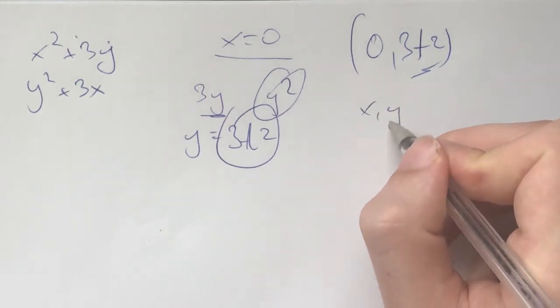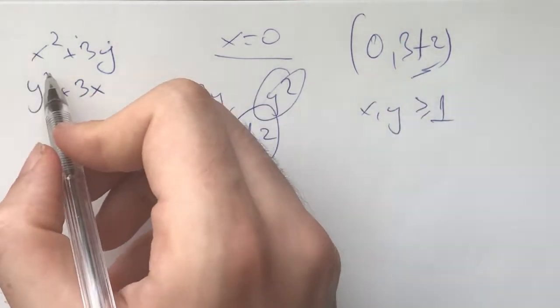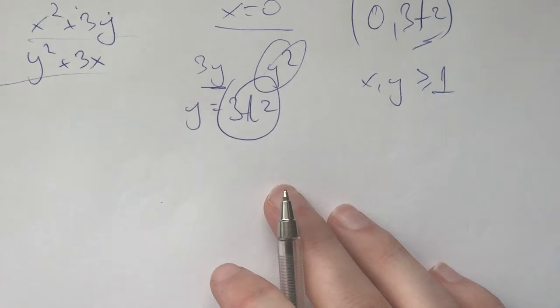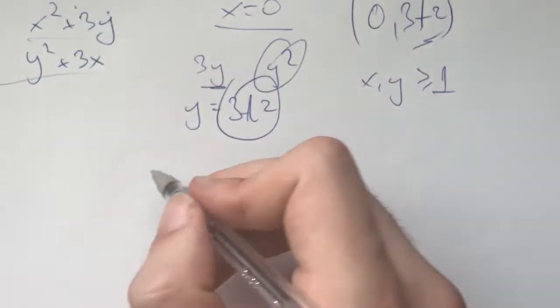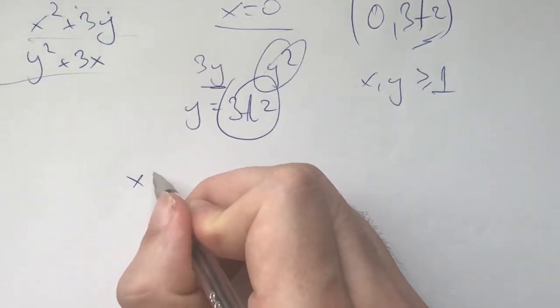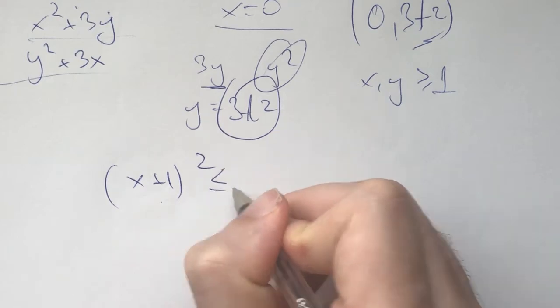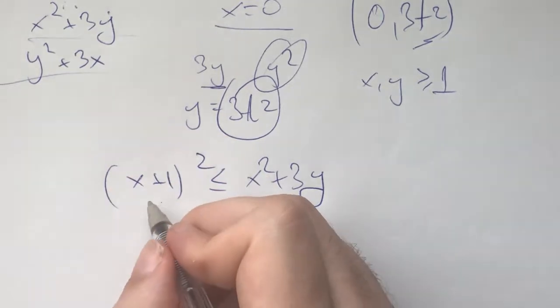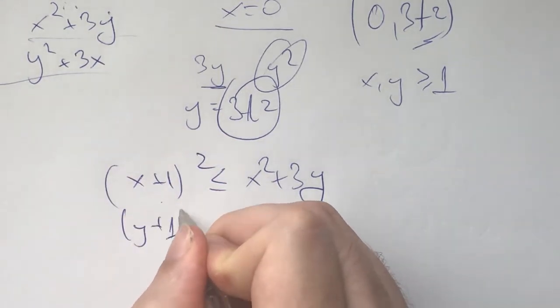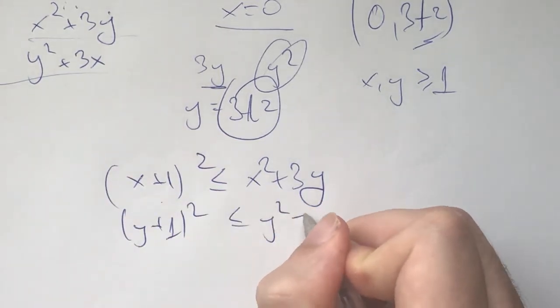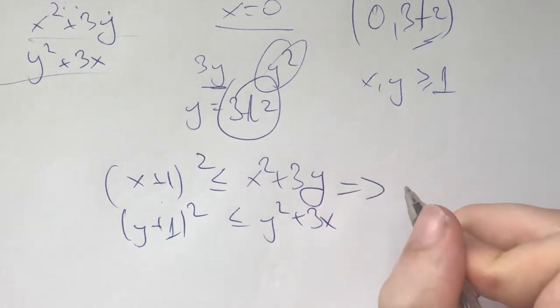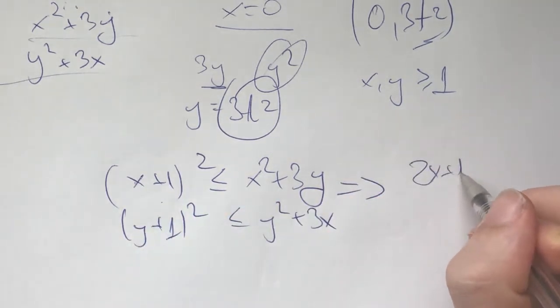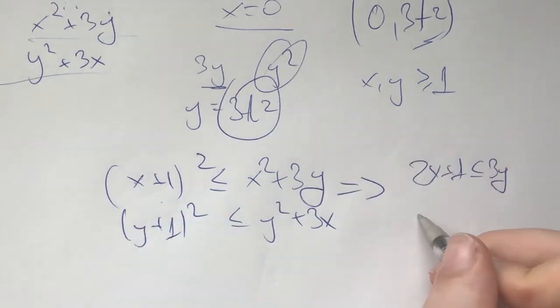But now, let's assume both of them are greater than or equal to 1. And then both of these squares are greater than or equal to the next one. So (x+1)² needs to be less than or equal to x²+3y. And the opposite holds for this, which means (y+1)² needs to be less than or equal to y²+3x. Now, these two imply 2x+1 ≤ 3y and 2y+1 ≤ 3x.